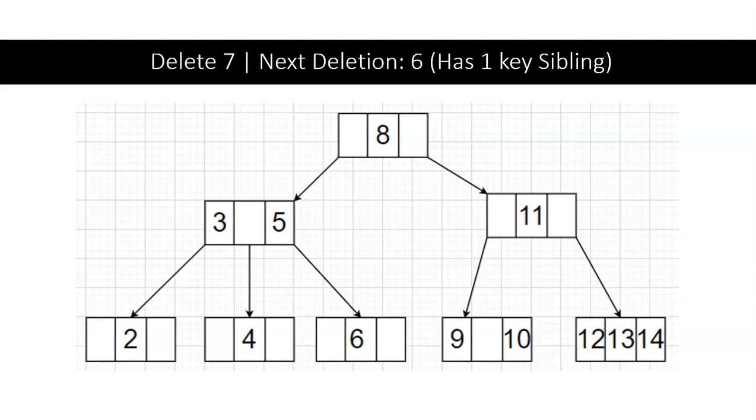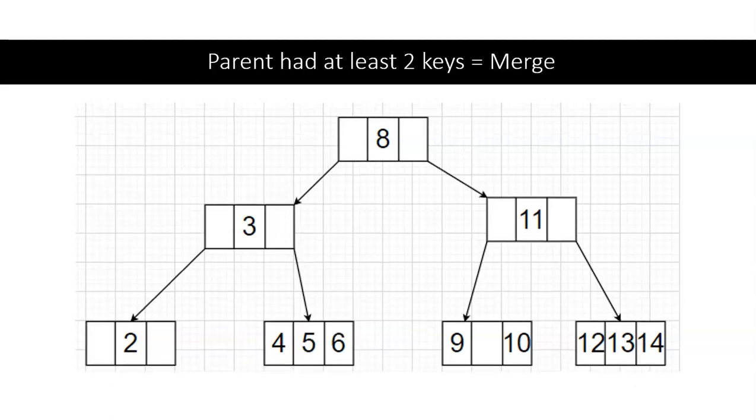Now we're going to be deleting 6. Since it's a leaf node also, we're going to be checking siblings at the 4 node. It has a single key, so we're going to do a merge with the parent. Then we are allowed to delete 6.